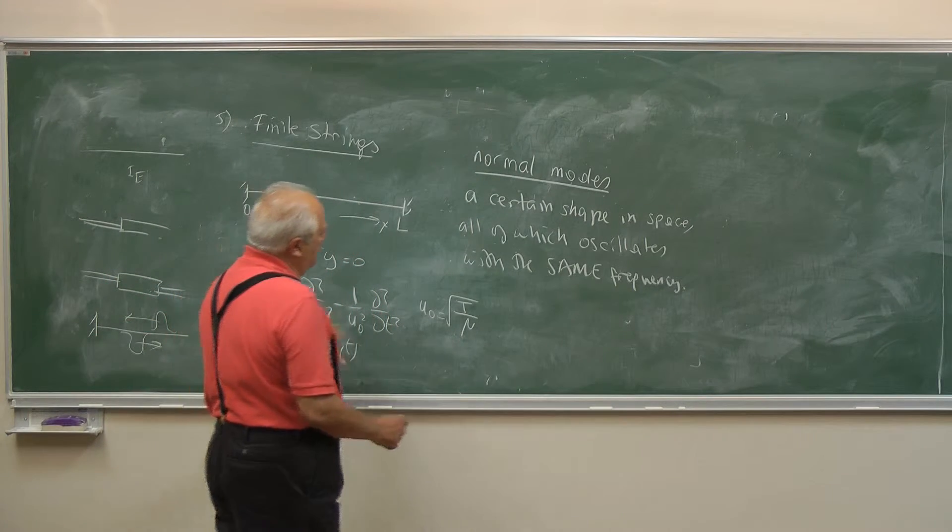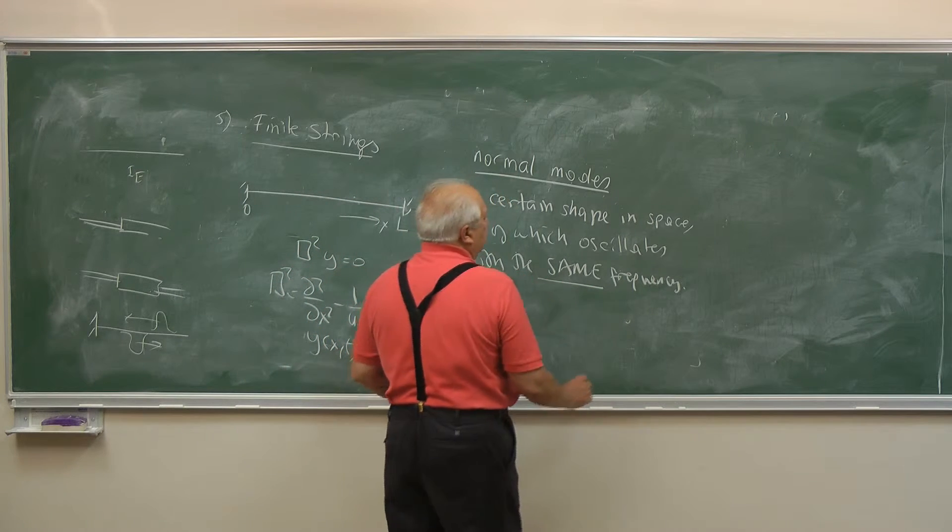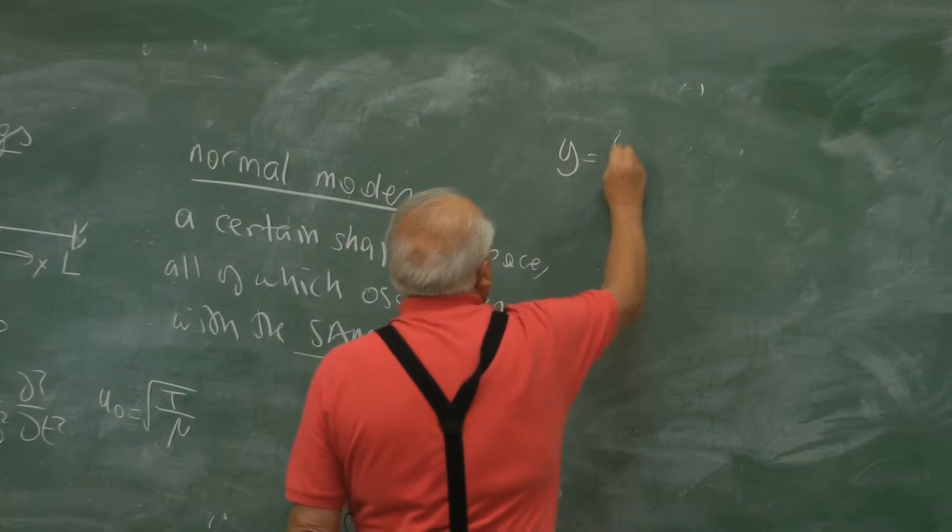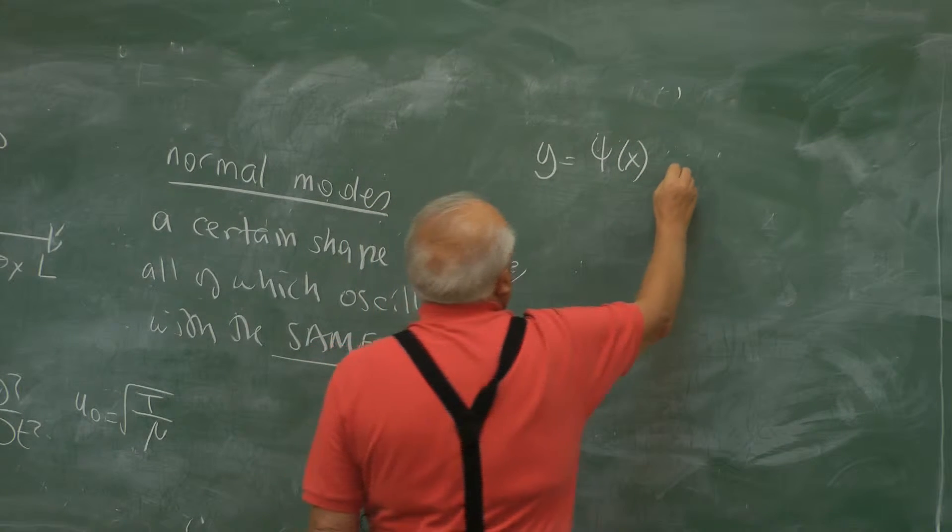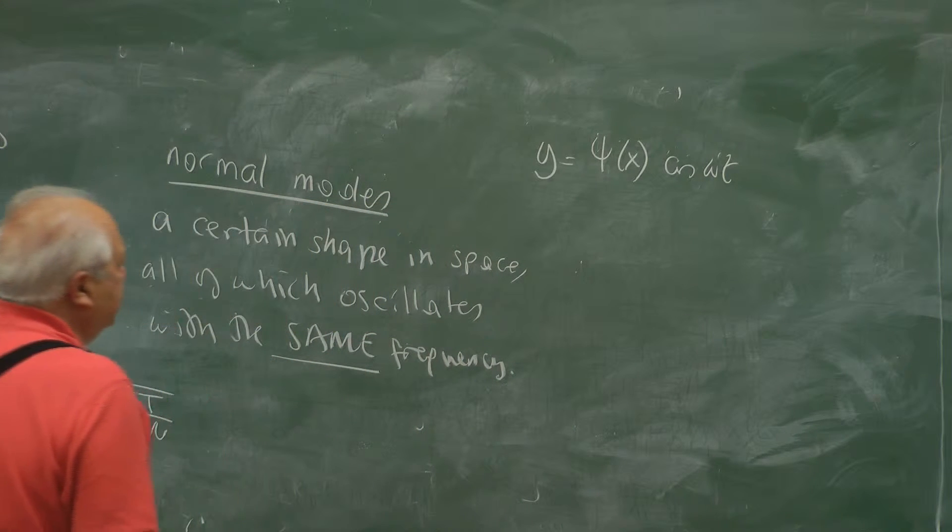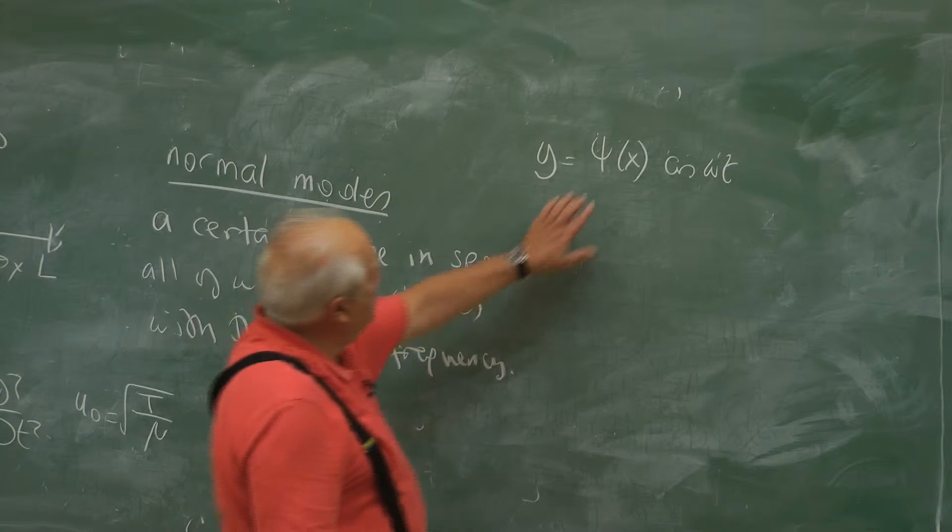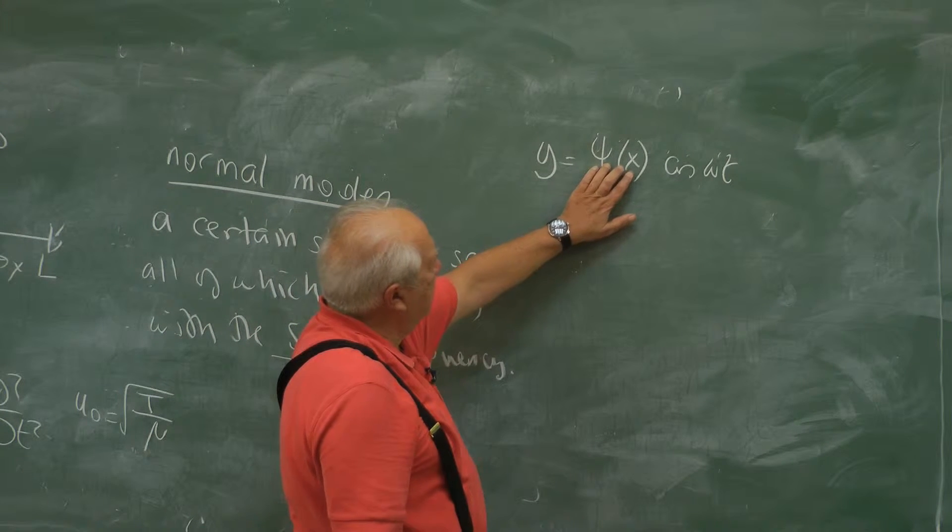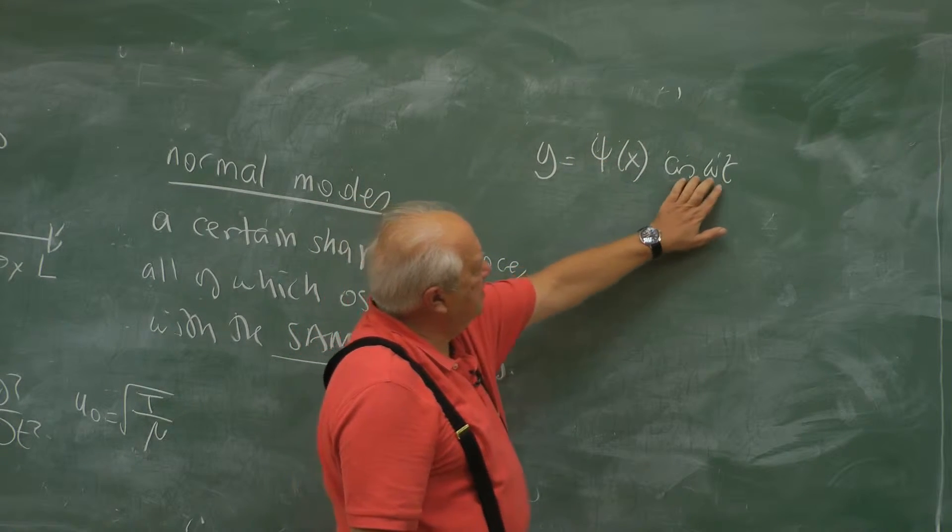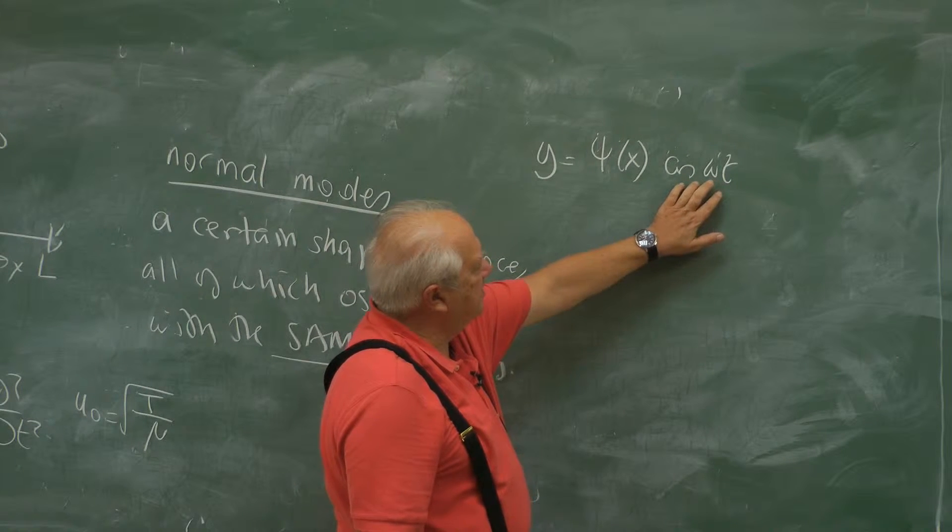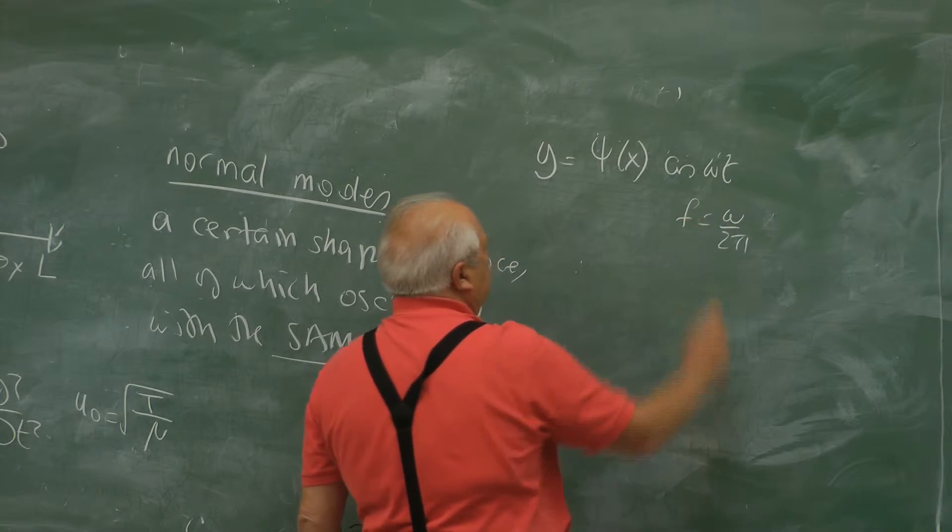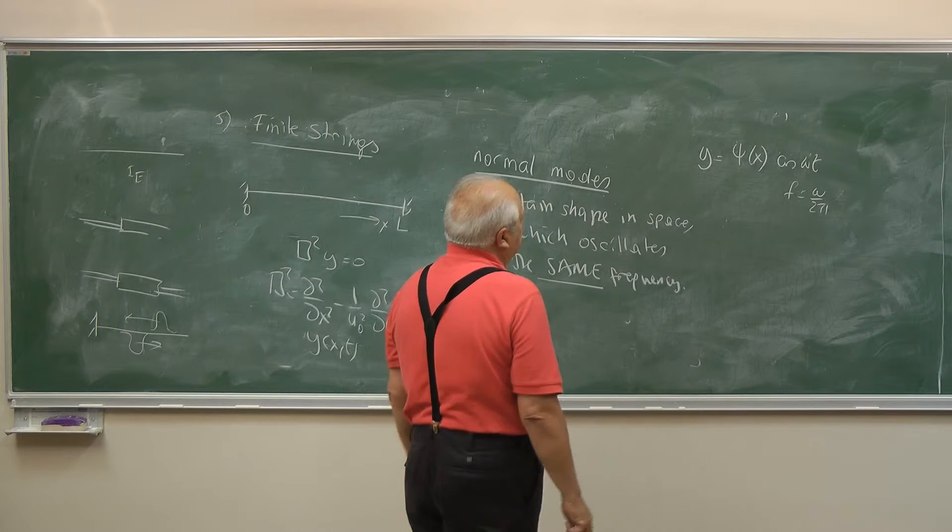So since there is a single frequency, we search for such solutions: ψ(x) cos(ωt). So there is a certain shape in space, ψ(x). This itself does not depend on time. A certain shape, and it is oscillating with the frequency f = ω/2π, with the angular frequency ω or frequency f.